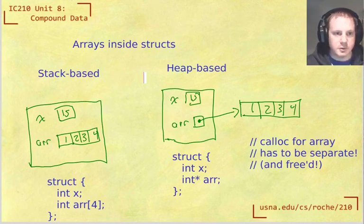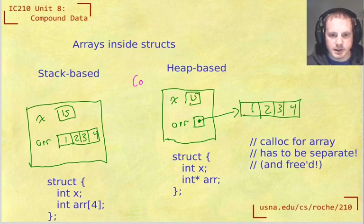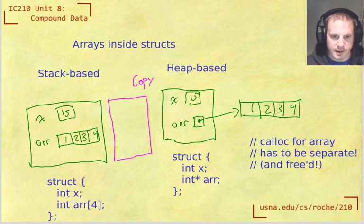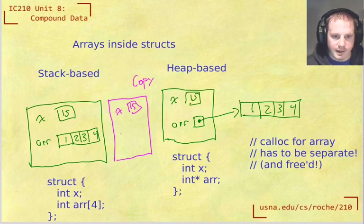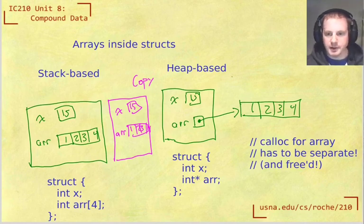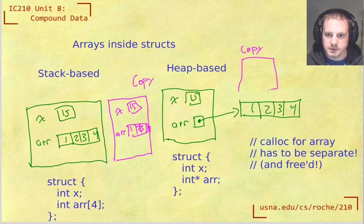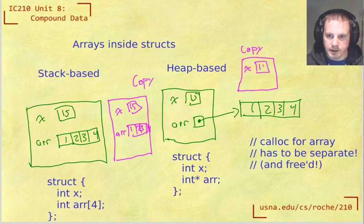If we copy this one, we really just copy everything. We get a new struct that has x is 15 and a new array with the same things inside it, a copy of everything. Whereas here, if we made a copy of this struct that I just drew with a heap-based array, then yes, it would get its own copy of the variable x.